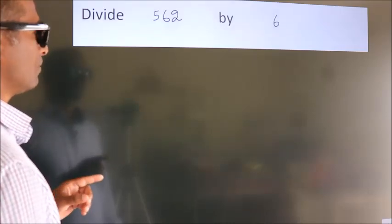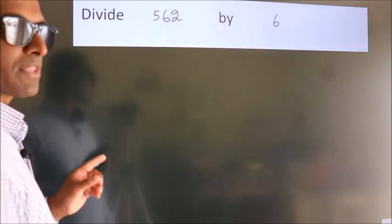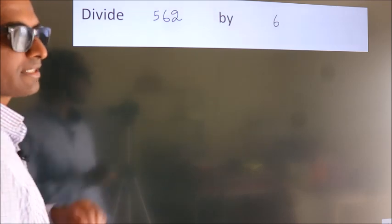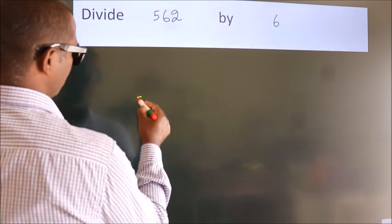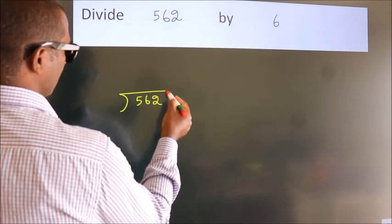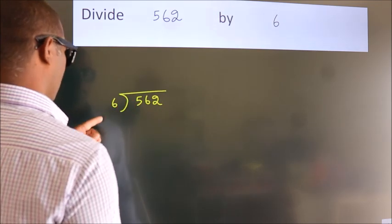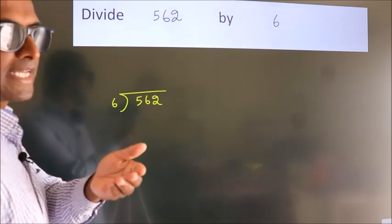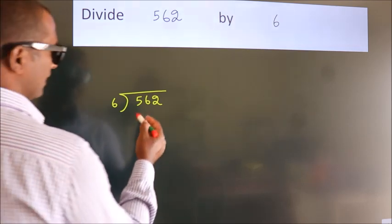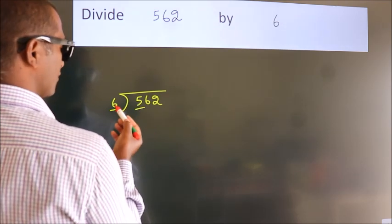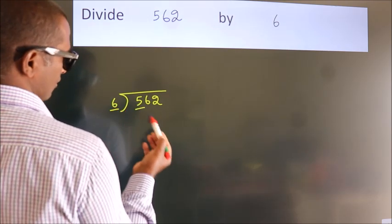Divide 562 by 6. To do this division we should frame it in this way: 562 here, 6 here. This is your step 1. Next, here we have 5 here, 6. 5 is smaller than 6, so we...